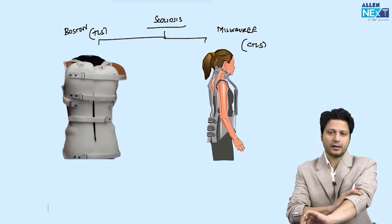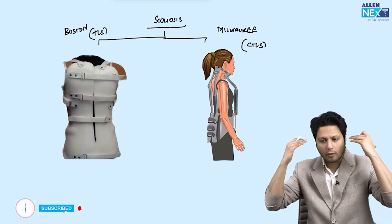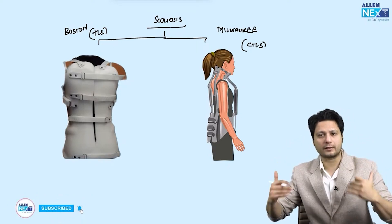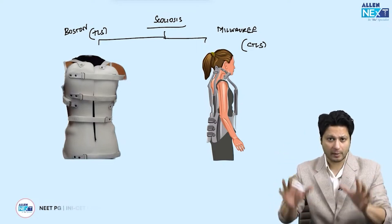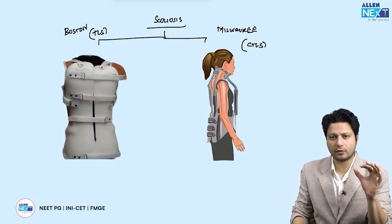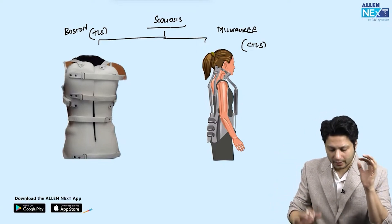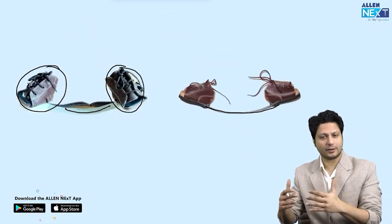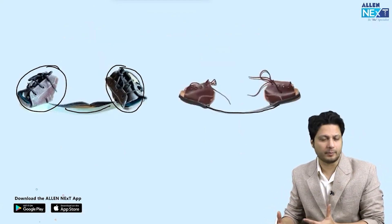The Milwaukee brace is used in scoliotic deformity, although the indications differ from the Boston brace. In the Milwaukee brace there is immobilization of the cervical, thoracic, lumbar, and sacral columns — all of them are immobilized. So these are the two braces for scoliotic deformities.